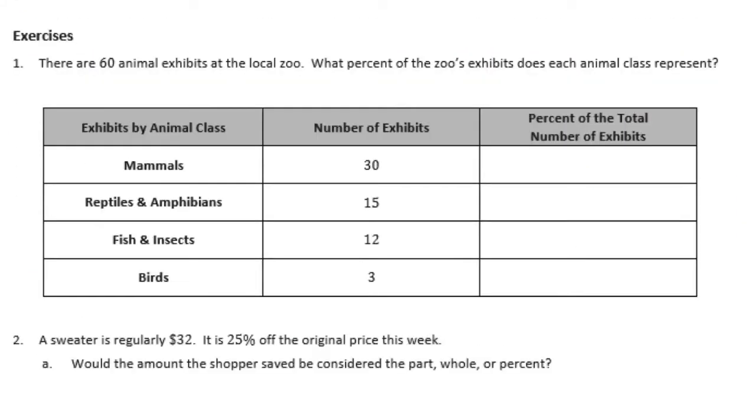Exercises. Number 1. There are 60 animal exhibits at the local zoo. What percent of the zoo's exhibits does each animal class represent? So there are 60 animal exhibits. The number of exhibits of mammals is 30. So 30 sixtieths are mammals. Now 60, I can't easily make that into 100. But 30 sixtieths, 30 is half of 60. So I know that this is equal to 1 half. And 1 out of 2, 1 half, half of 100% would be, that would be 50%.